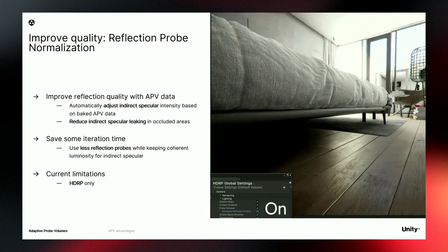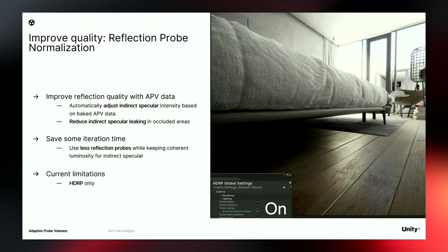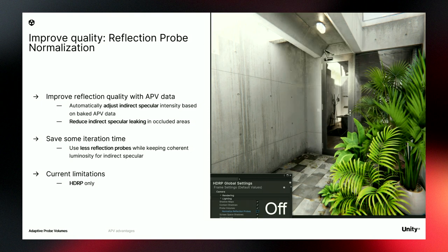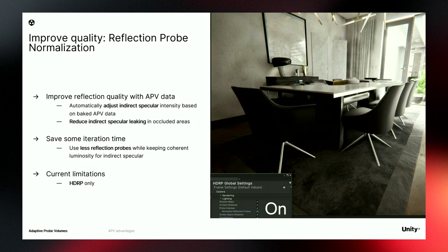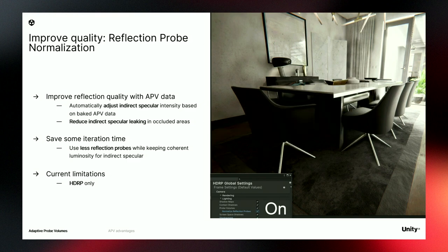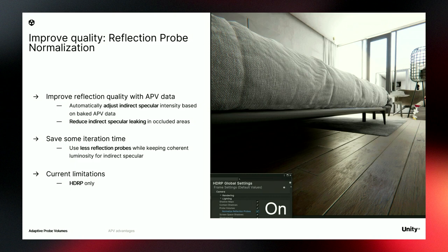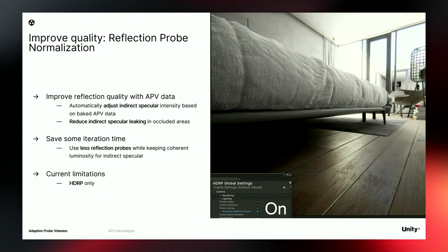Another cool feature is reflection probe normalization. Usually we have a few reflection probes but a lot of light probes, and we can take advantage of this. The main idea is to use APV data to adjust reflection intensity — particularly useful in occluded areas. We can use APV data to automatically dim down the reflection so it fits more closely to the environment. Instead of placing an additional reflection probe in an occluded area, like under a bed, you can use the normalization and let Unity and APV do the job.